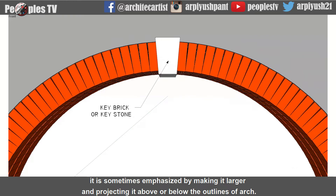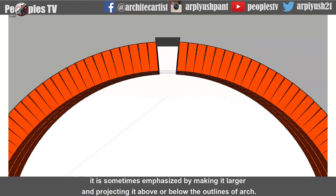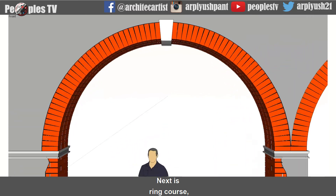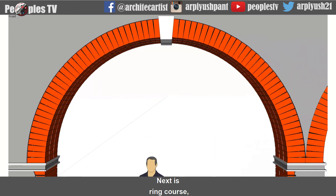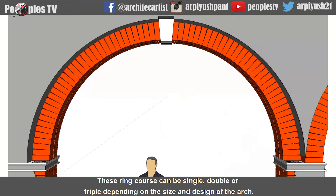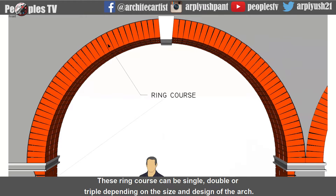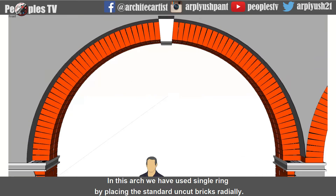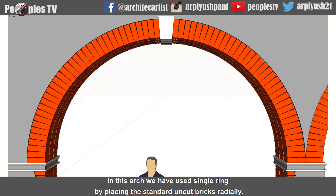Next is ring course, also known as ring or rim. It is the circular course comprising the arch. Ring courses can be single, double, or triple depending on the size and design of the arch. In this arch we have used a single ring by placing the standard uncut bricks radially.